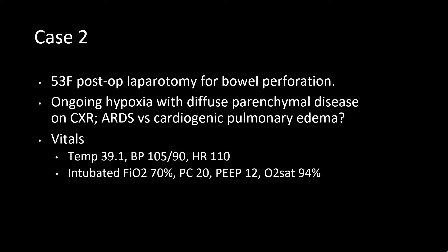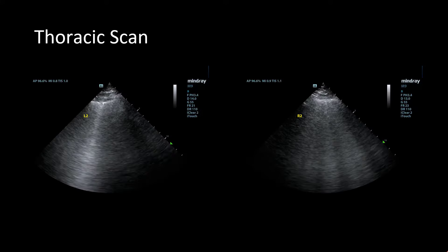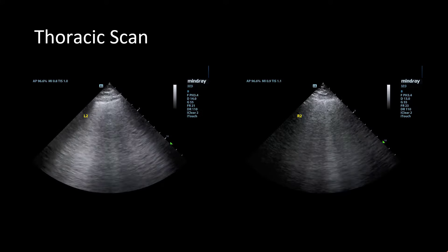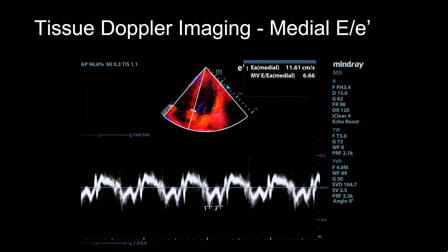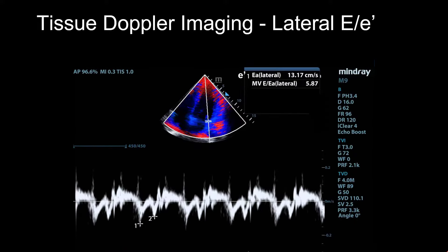Case 2: a 53-year-old female post-op laparotomy with ongoing hypoxia and diffuse parenchymal opacities on chest x-ray. Her thoracic scan showed diffuse B lines anteriorly. Pulse-wave Doppler shows an E velocity of 77 cm/s. Medial tissue Doppler imaging shows an E-prime of 11.6 cm/s with a medial E over E-prime of 6.6. The lateral E over E-prime was 5.8. Averaging the two gives an E over E-prime less than 8 — therefore the B lines are secondary to an infectious or inflammatory process, consistent with ARDS and unlikely cardiogenic pulmonary edema.